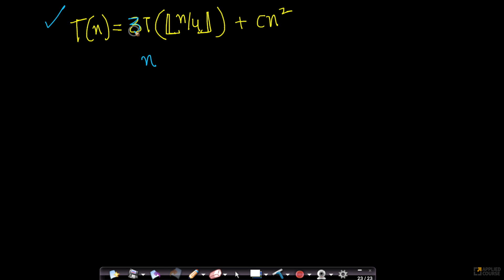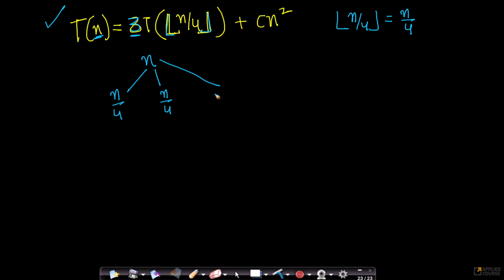Let's start building the recursion tree. A problem of size n is broken up into three problems of size n/4, n/4, and n/4. Because we have a 3 in the recurrence, we break it into three sub-problems. To combine these three solutions, we need cn² time. So at the root level of the tree, the cost to combine is cn².